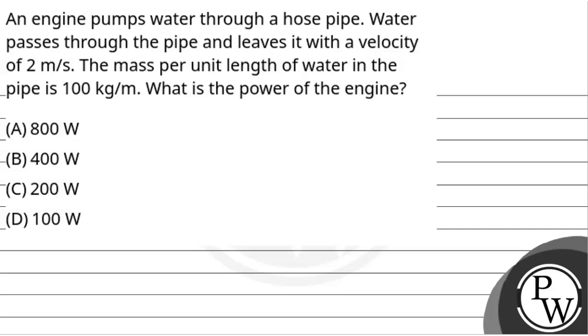Let's read the question. The question says that an engine pumps water through a hose pipe. Water passes through the pipe and leaves it with a velocity of 2 meter per second. The mass per unit length of water in the pipe is 100 kg per meter. What is the power of the engine?